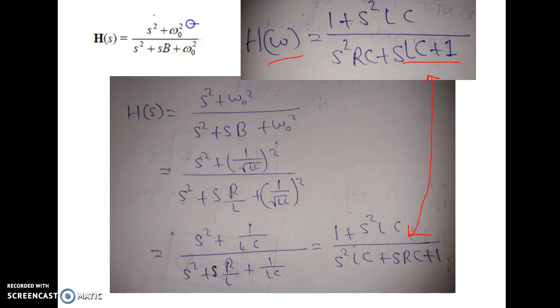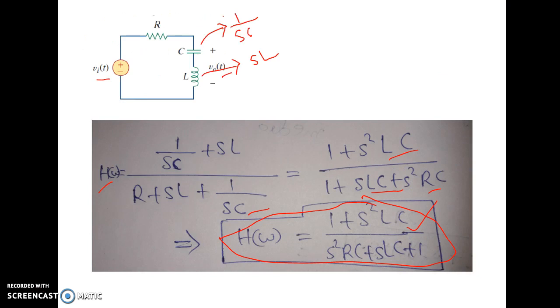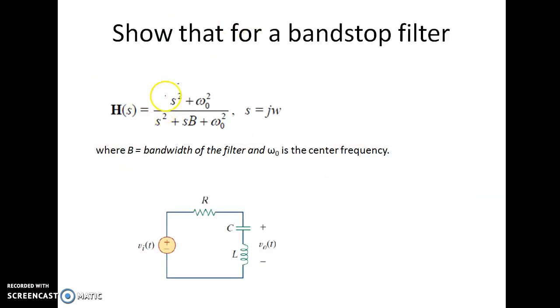Okay. So, basically, this expression is nothing but expression of the transfer function of a bandstop filter. Okay. So, basically, we got a very important conclusion that the H of S equal to S squared plus omega naught squared by S squared plus S B plus omega naught squared, where B is the bandwidth and omega naught the center frequency, it indicates one bandstop filter. Clear?